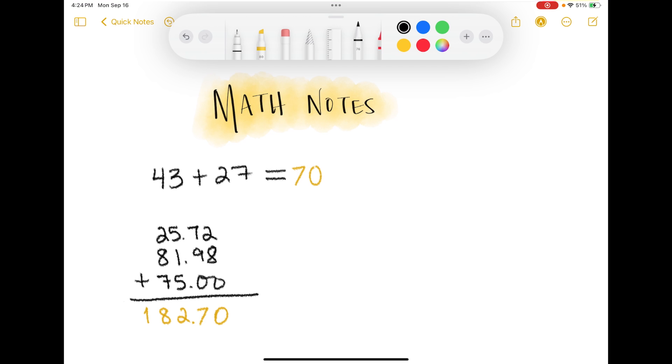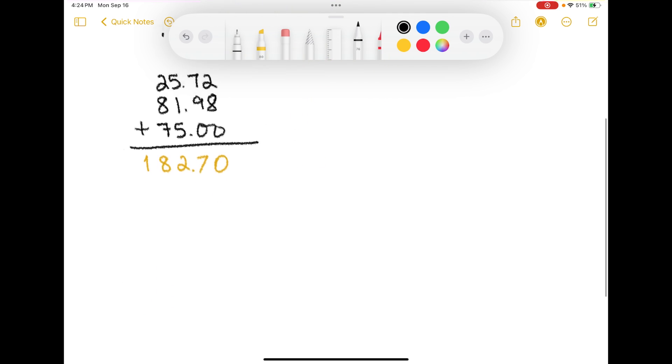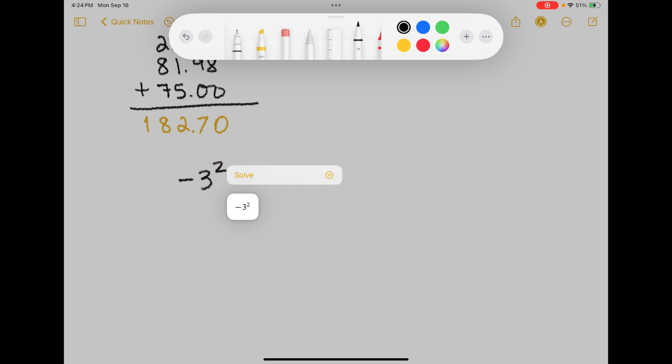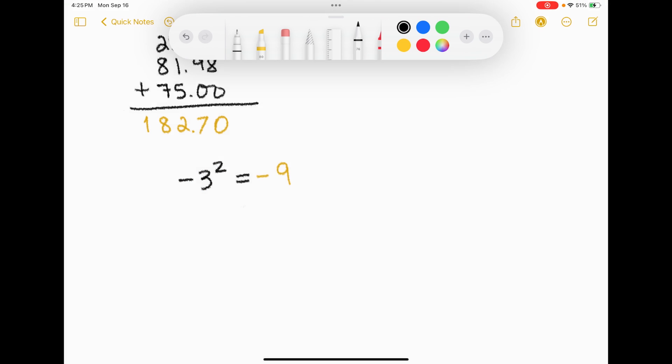And then of course I tested it to see what it knew. So I wanted to know if I put negative 3 squared if it would calculate that correctly. And it does. And it knows if I put that in parentheses to treat that differently. So I did like that.